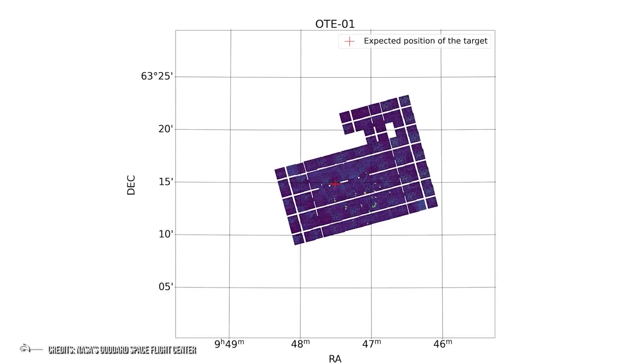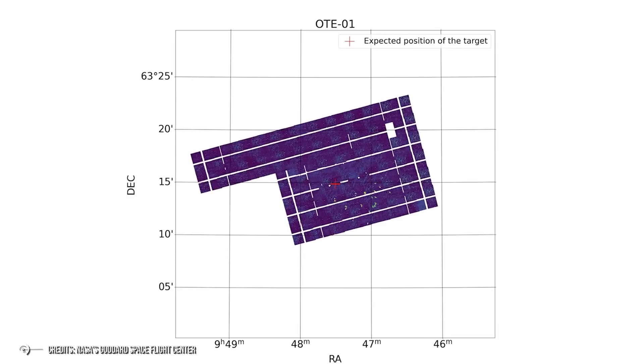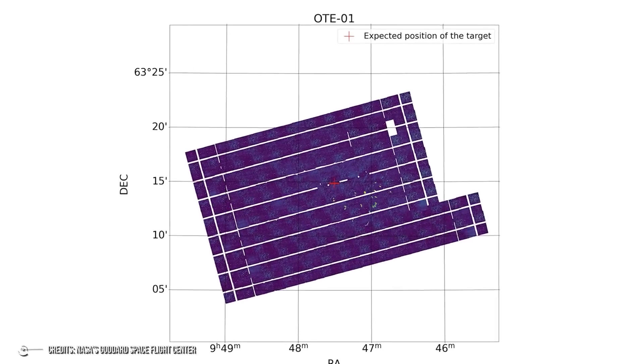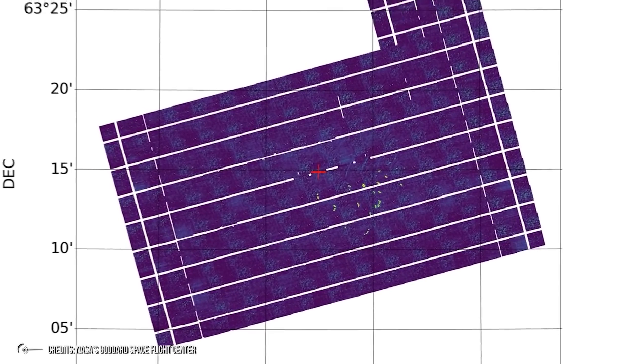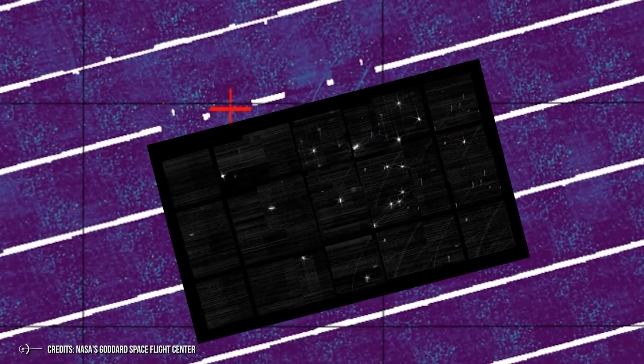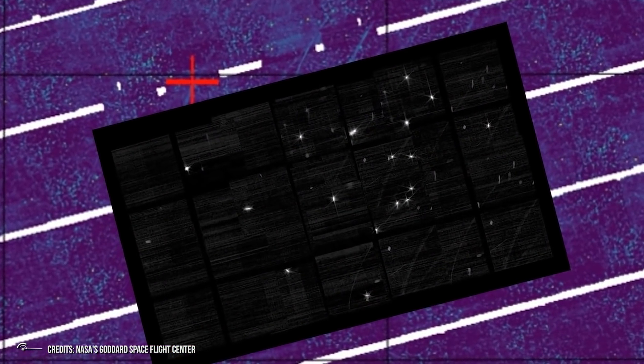In fact, it will be used to figure out how much each segment needs to be moved and calibrated. The next step will be to realize by February new photos, always of the star HD 84406, but in which the 18 segments will be finely aligned to focus the image of the star in one point.